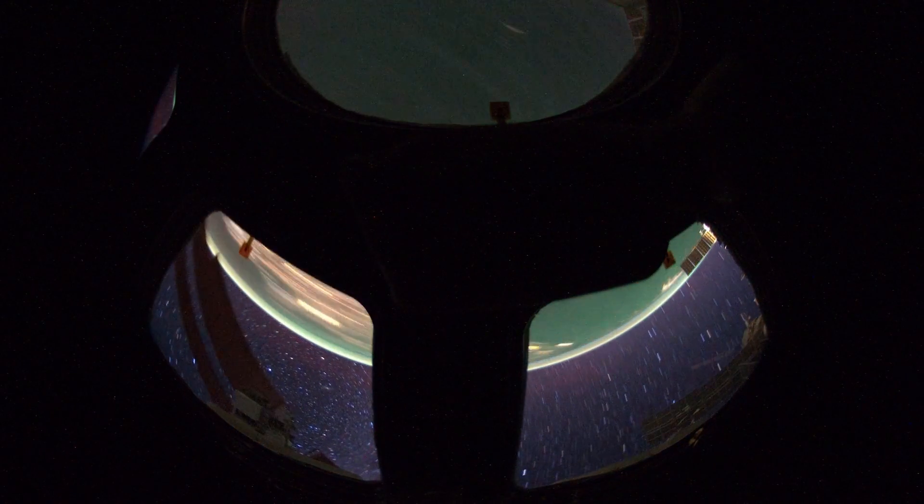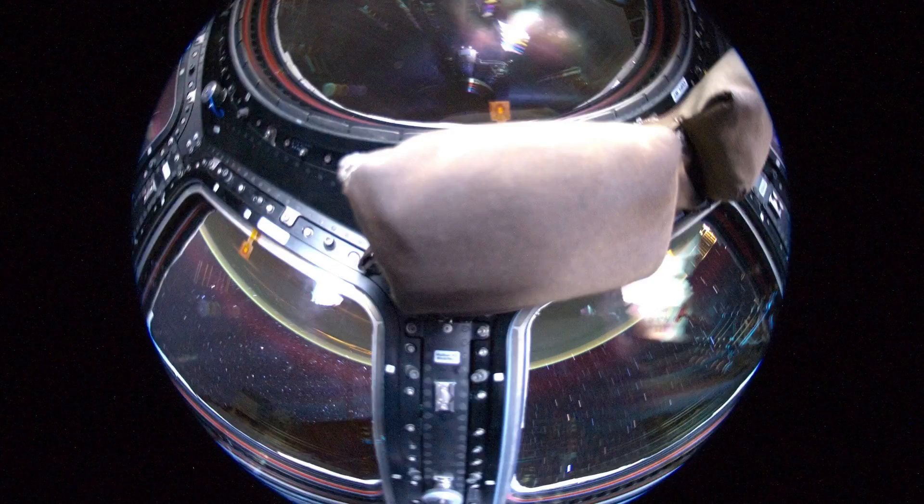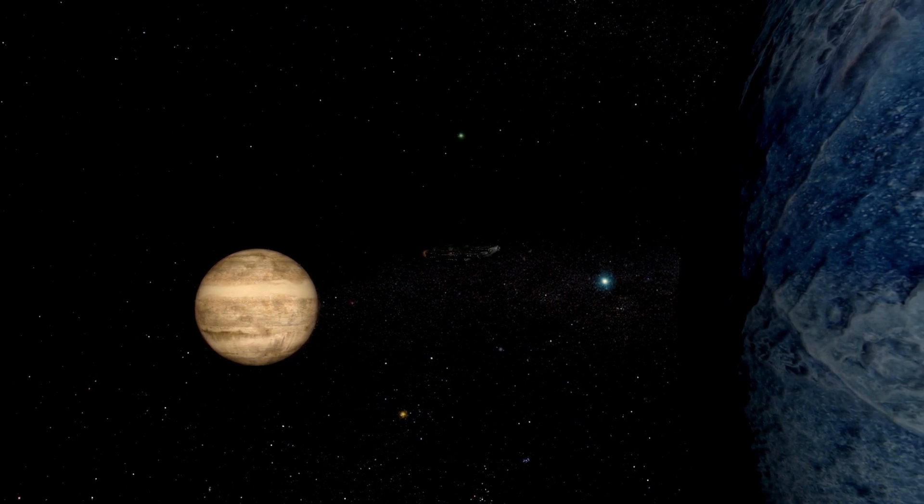In the distant reaches of our solar system, beyond the orbit of Neptune, the James Webb Space Telescope turned its gaze toward the Kuiper Belt, a vast region populated by icy bodies and remnants of the solar system's formation.